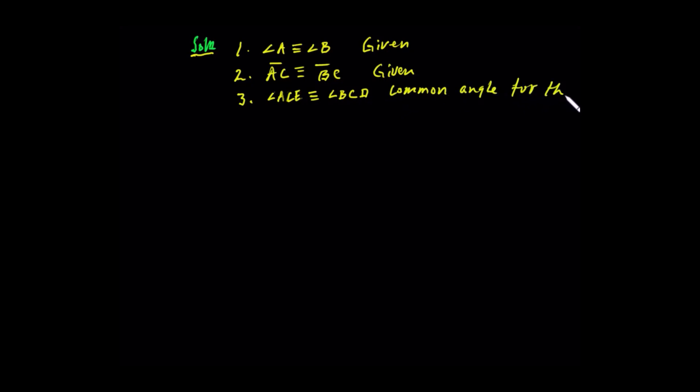So what is the triangle? How do you have to prove the triangle? Angle, side, angle. Therefore, by angle-side-angle, triangle AEC is congruent to triangle BDC.